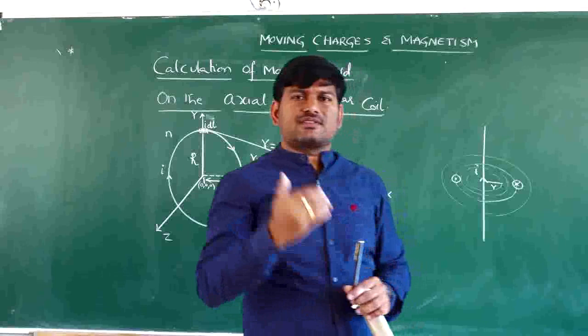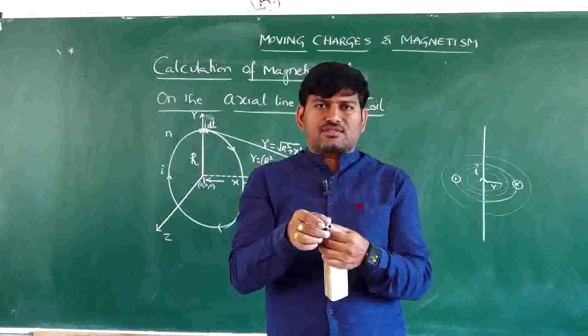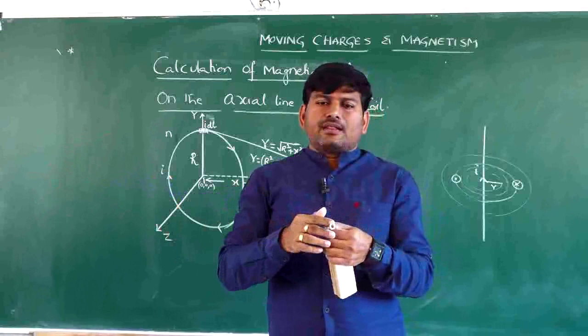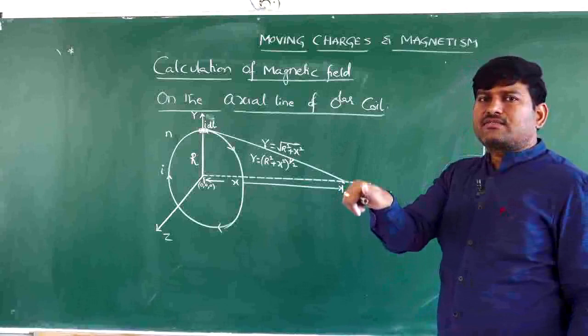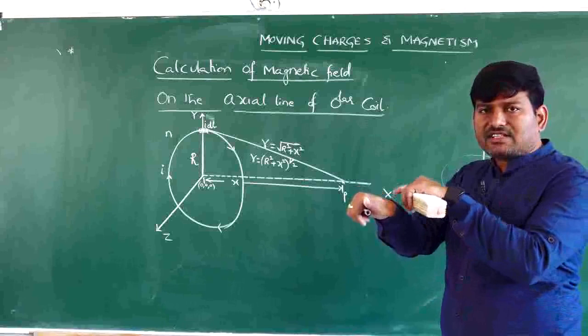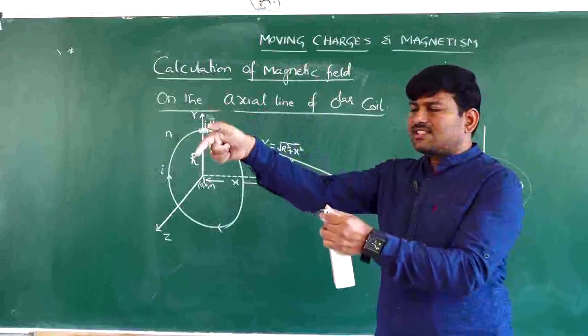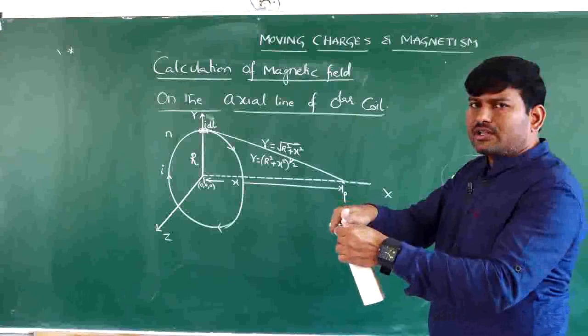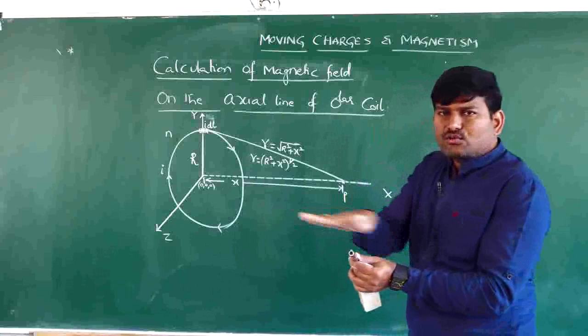For example: a current-carrying conductor is placed in the east-west direction with current passing from west to east. Using the right-hand rule, the magnetic field above the conductor is towards the south, and below the conductor it is towards the north. Such directional questions are commonly asked in board and competitive examinations.